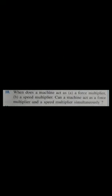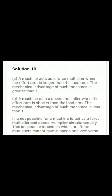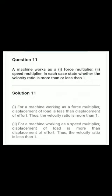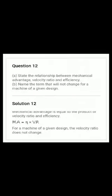Question number ten is very easy — please go through it. Question number eleven: a machine works as a force multiplier or speed multiplier — in each case state whether the velocity ratio is more than or less than one. For a force multiplier, velocity ratio must be greater than one; for a speed multiplier, it is less than one. Question number twelve is very easy. Question number thirteen is a very important derivation from your book — please go through it.